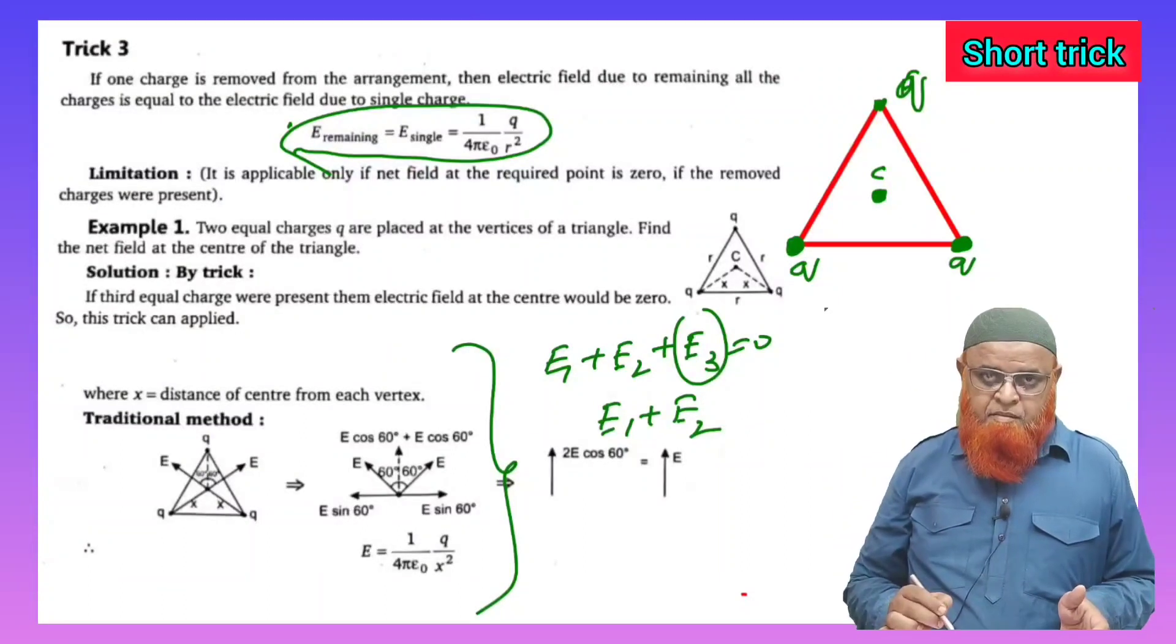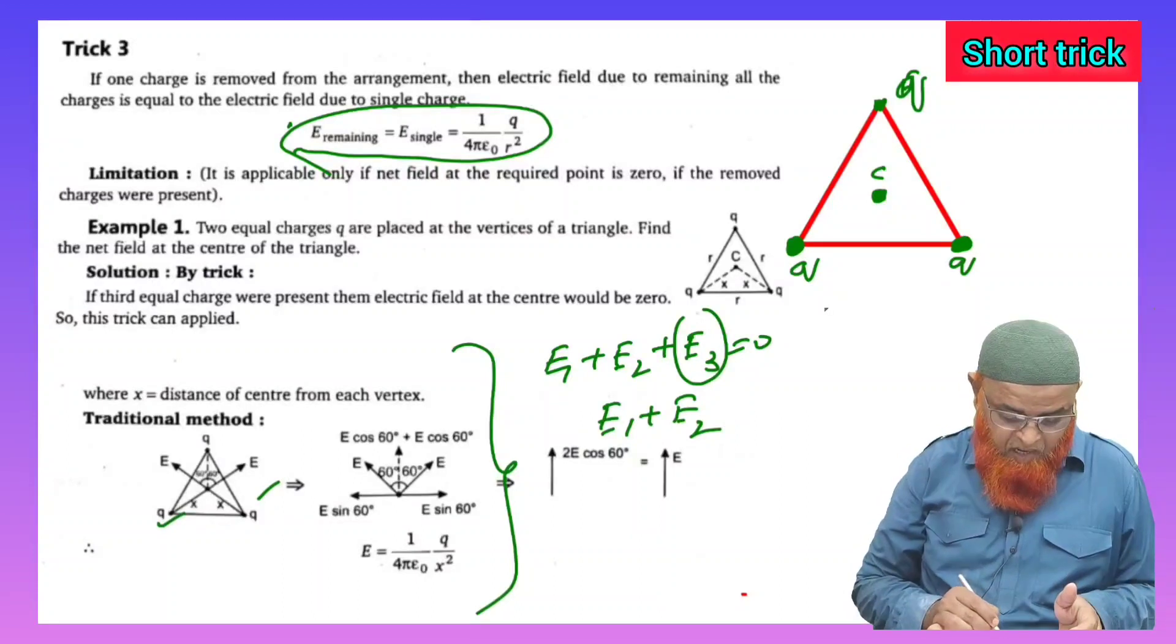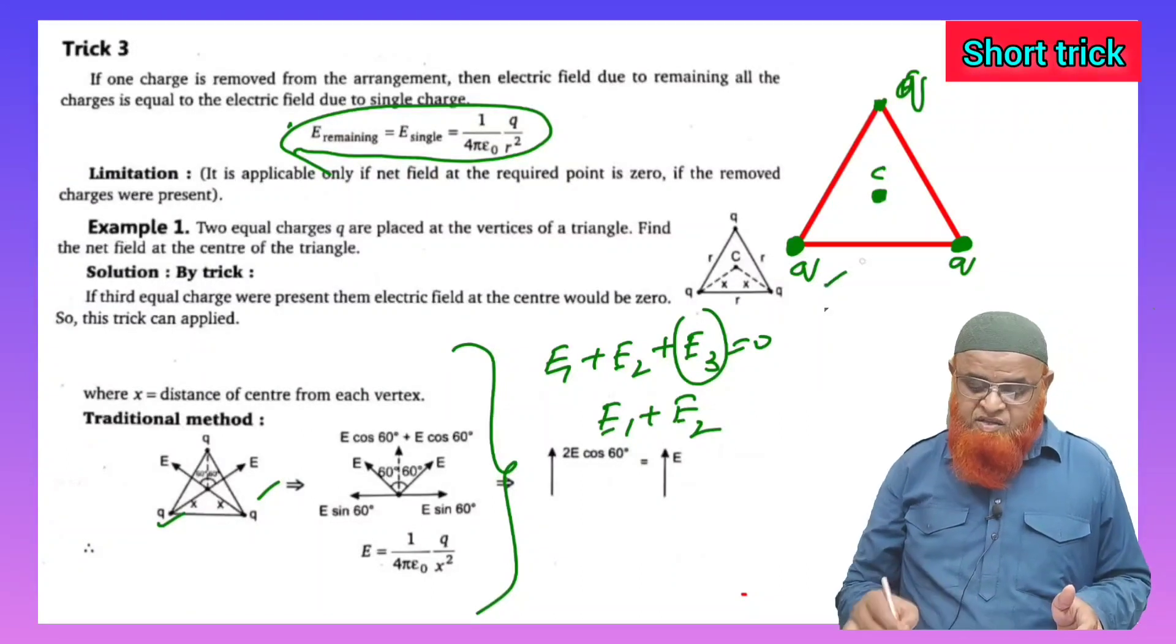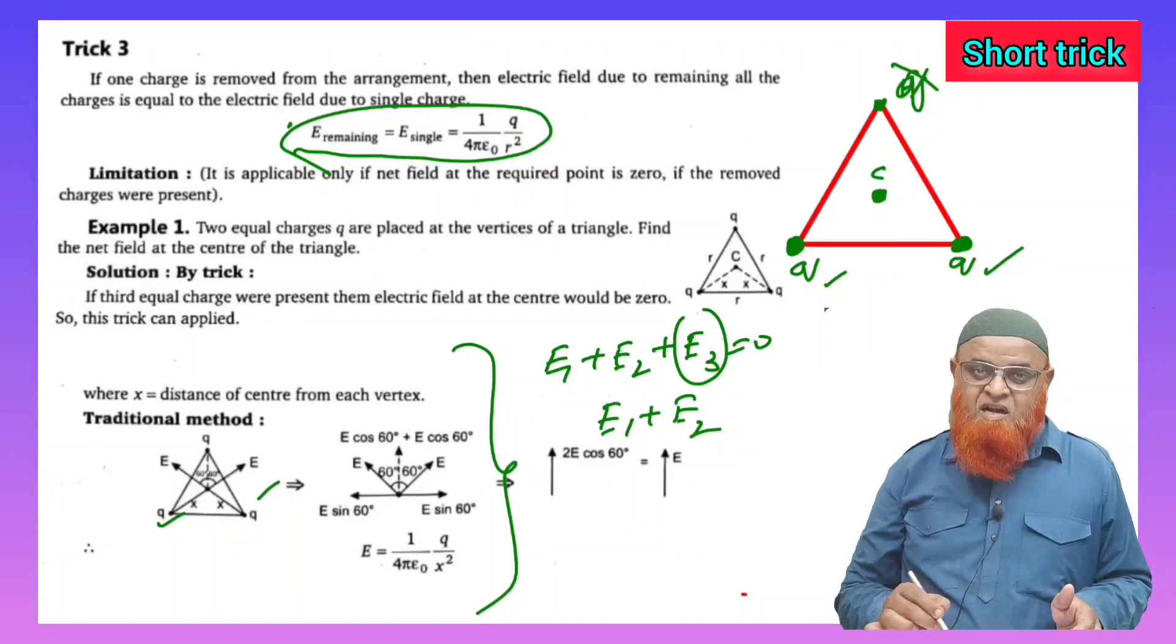If there are two charges q and q at this place, then what is the net electric intensity at this point C? Only these two q charges are present; this one is not present, let us imagine.